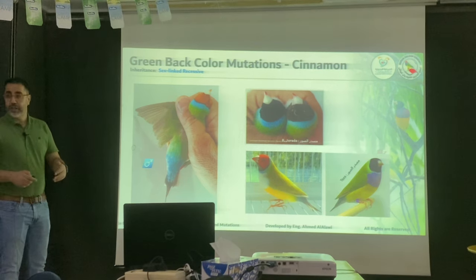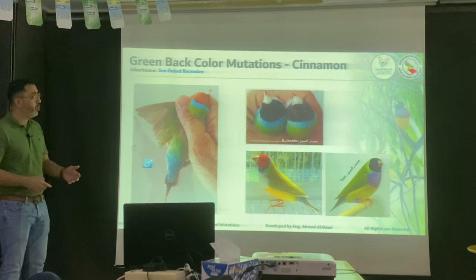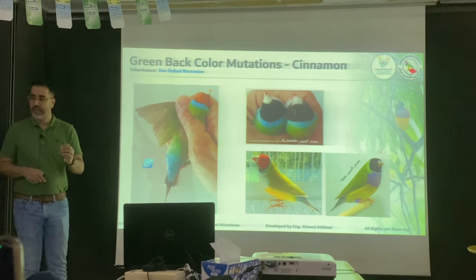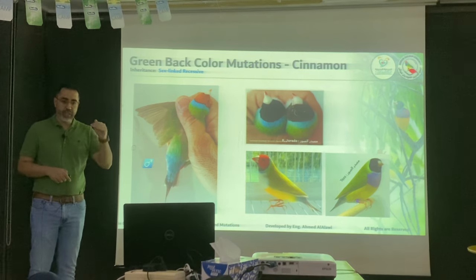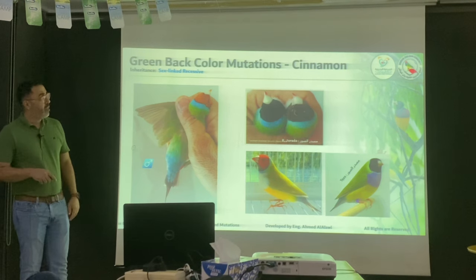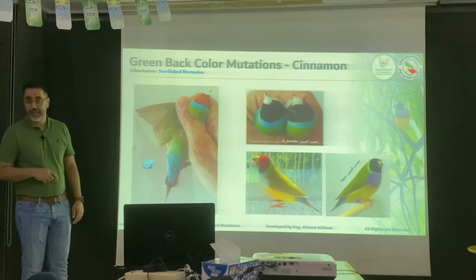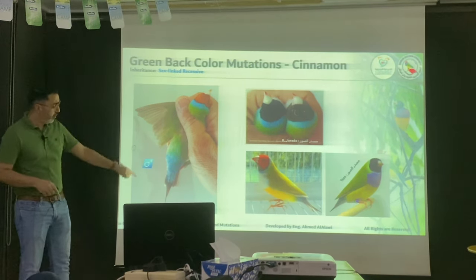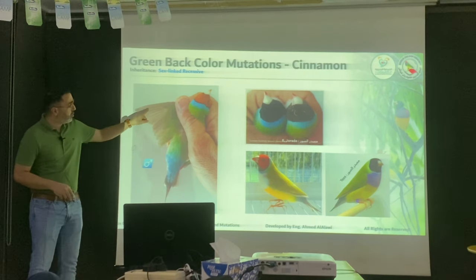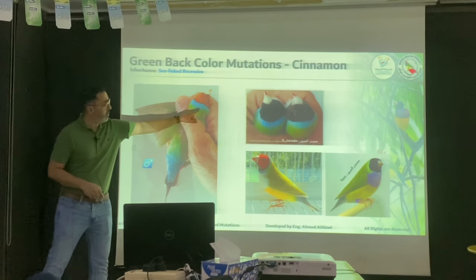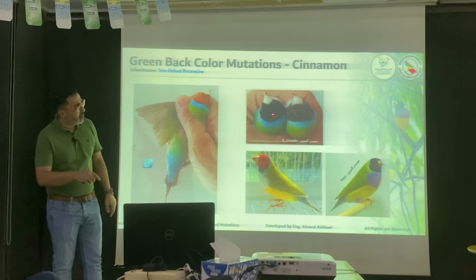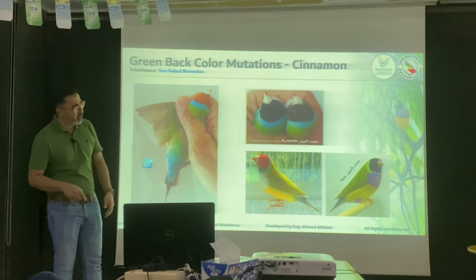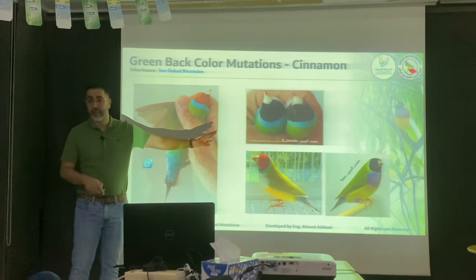Then comes the famous mutation — cinnamon, which some people call Bruno. Cinnamon plays a role only on the black in the bird: brown oxidizes the black. You can see the flight feathers which are supposed to look black are all brown. This is a better example of black versus brown — it's all brown here. And this is a female, but the lighting isn't great; she's marvelous in person. Cinnamon is the official naming, not Bruno — be official, be international.